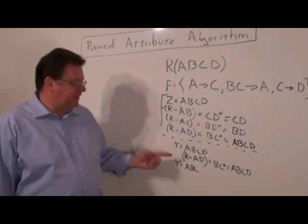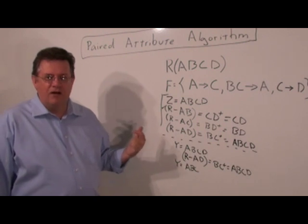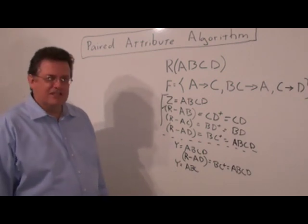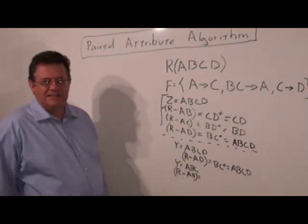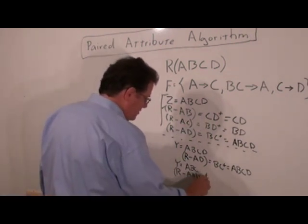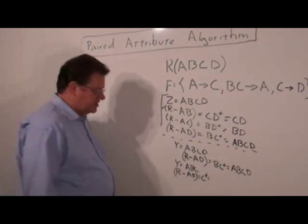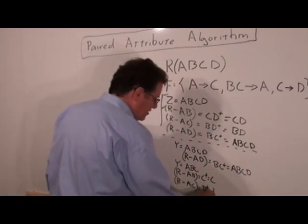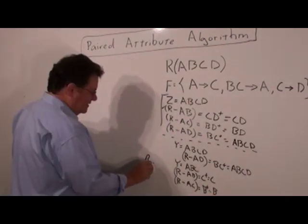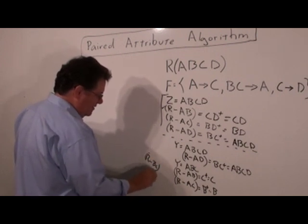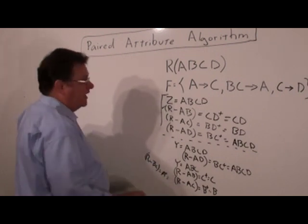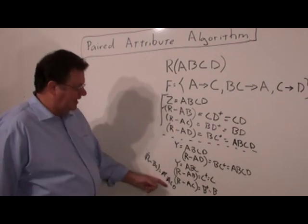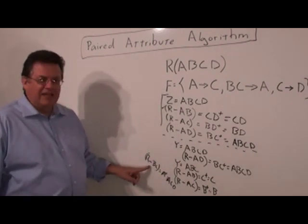Given three attributes, we try combinations of R minus AB, R minus AC, or R minus BC. R minus AB is C, and C closure is just C. R minus AC is B closure, and B closure is just B. R minus BC equals A closure. And A closure will be ACD. ACD contains the C, so we get rid of the B.